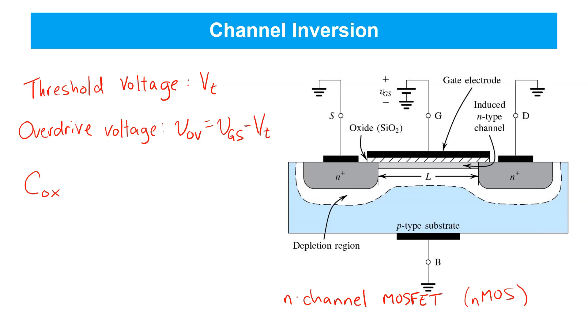Now, like any parallel plate capacitor, it's simply given by the relative permittivity of the insulator, in this case, silicon dioxide, which has a relative permittivity of about 3.9, epsilon naught, and the thickness of the insulating layer, in this case, the thickness of the silicon dioxide.